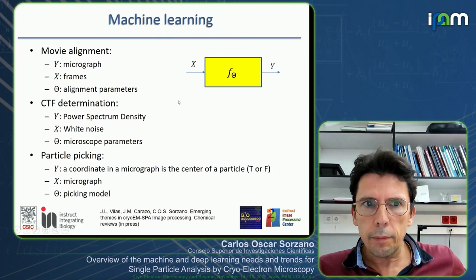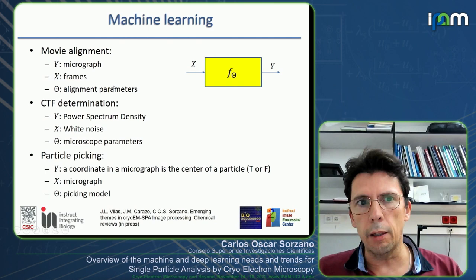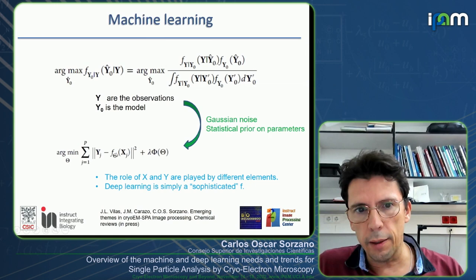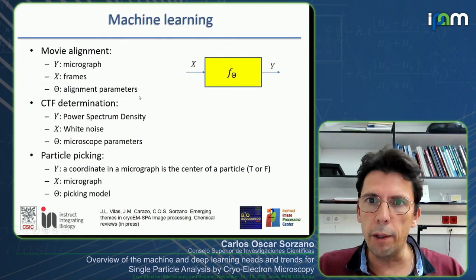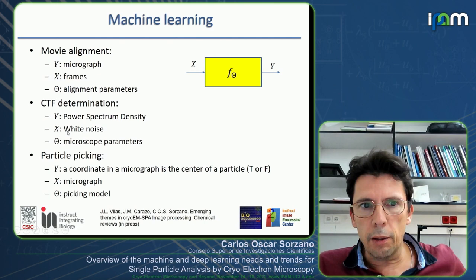Depending on your problem, x, y, and f will be different. For movie alignment, the input x are the frames, the output y are the micrographs, and the theta parameters are the alignment parameters describing how much each frame is moving with respect to the rest.